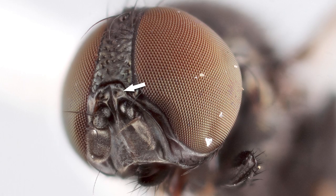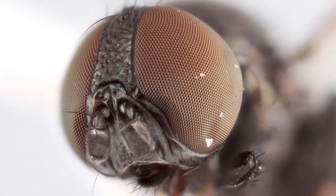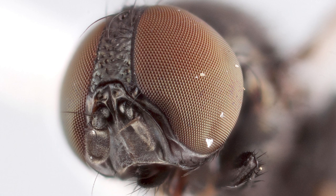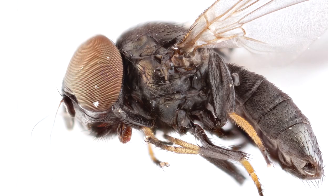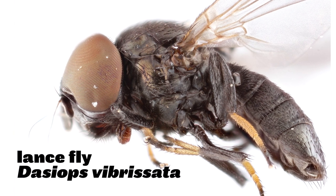Through structures like the divots above the antennae and these tusk-like hairs on the face, we were able to actually ID it to a specific species, Daisyops fibroseta.